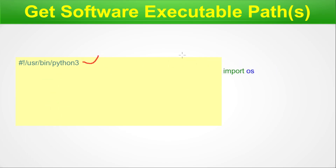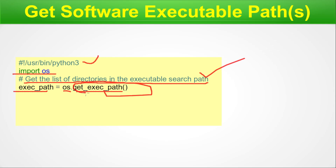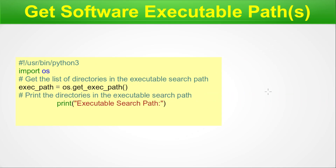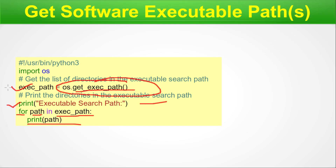To fetch the executable path, you can use this example. First line is the Python interpreter, then import os. Next we fetch the list of directories in the executable search path using os.getexecpath(), storing the result in a variable. Then we use a for loop — iterating over exec_path and printing each path.